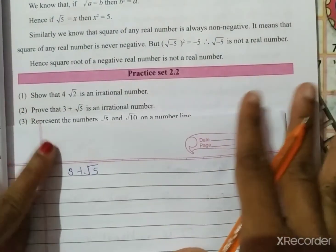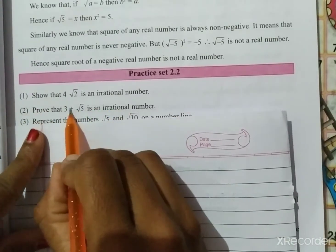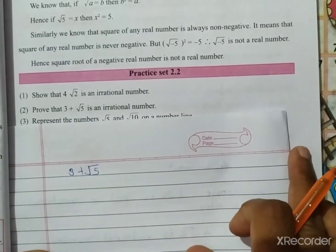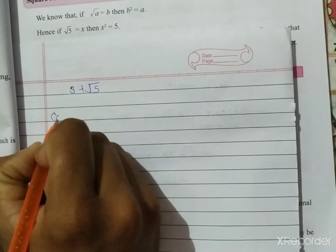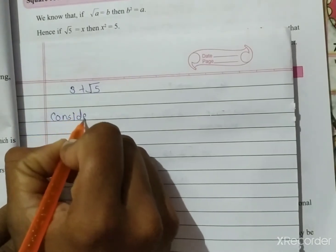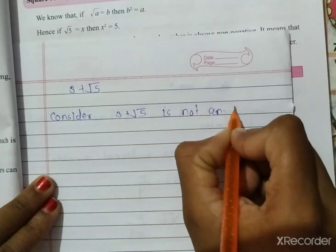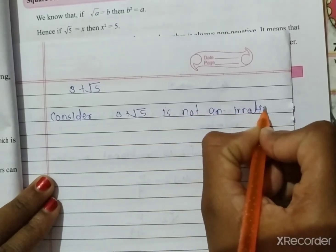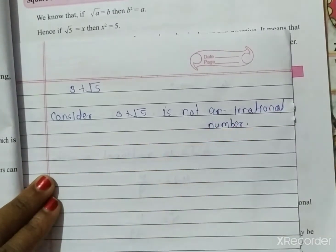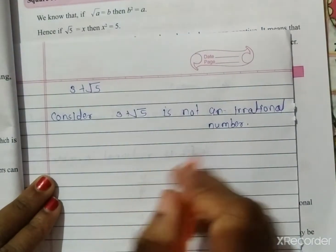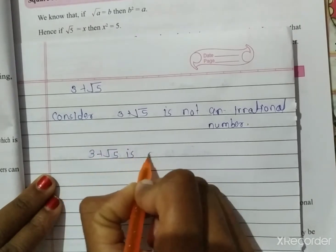The next example is: show that 3 + √5 is an irrational number. We will suppose — consider — that 3 + √5 is not an irrational number. So we consider it is not irrational, meaning 3 + √5 is a rational number.